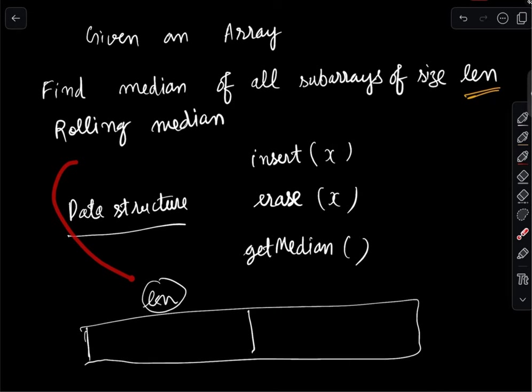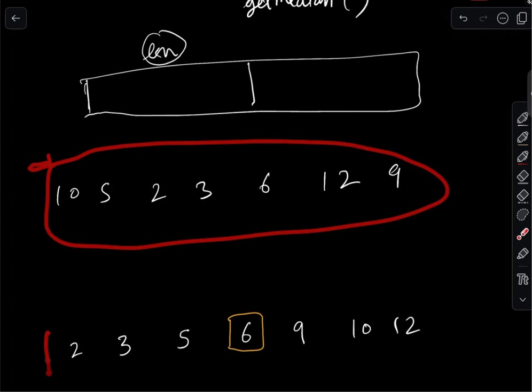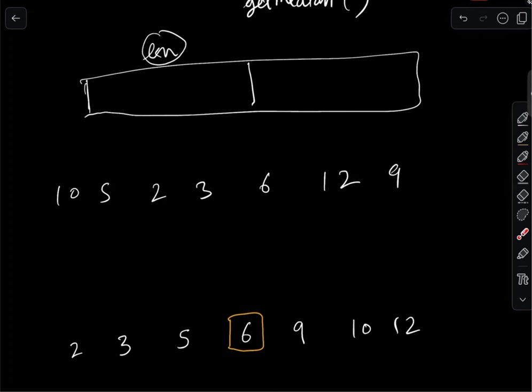Now, how do we design this data structure? First, what is the definition of median? If we have elements in the data structure and we sort them, the middle element is the median.